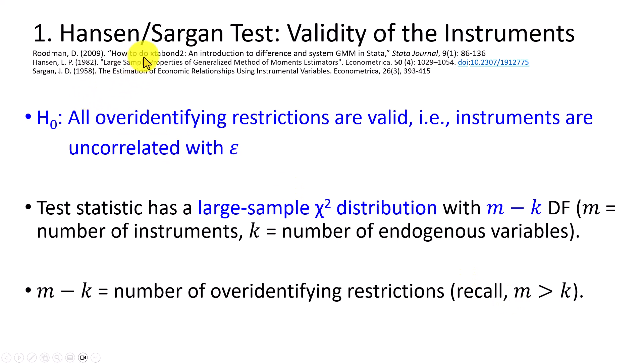The Hansen-Sargan test is a test of the validity of the instruments. The null hypothesis is that all over-identifying restrictions are valid, meaning that the instruments are uncorrelated with the error term. The test statistic is asymptotically chi-squared distributed with m minus k degrees of freedom, where m is the number of instruments in the model, and k is the number of endogenous regressors in the model. So the difference thereof refers to the number of over-identifying restrictions, noting that typically the number of instruments exceeds the number of regressors.